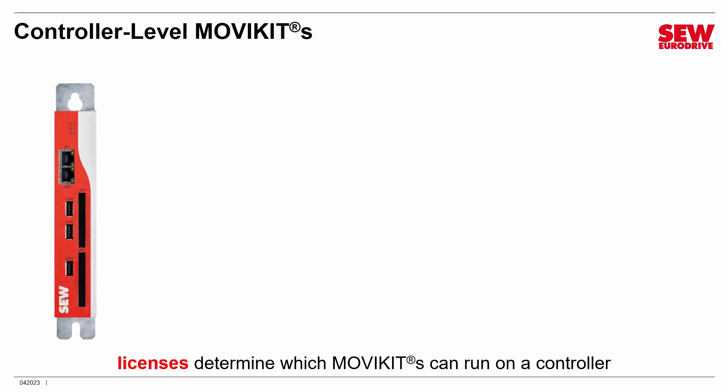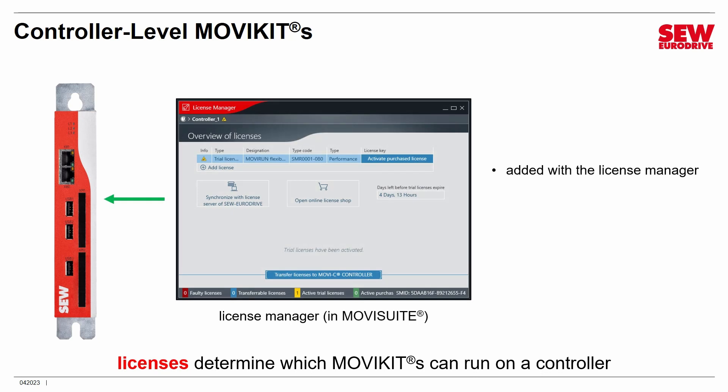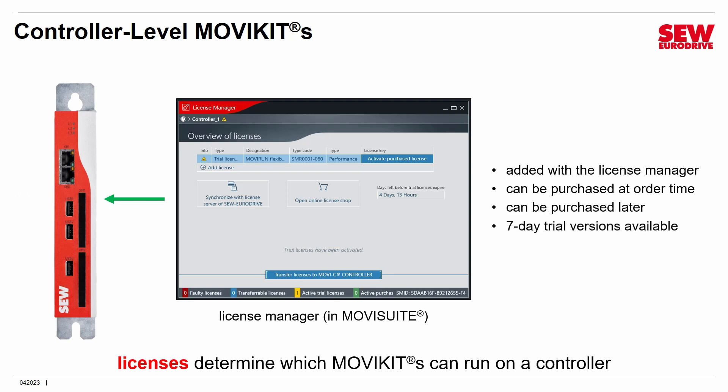Controller level MoVC kits are controlled by licenses, not application levels. You need to purchase a license to run kits that aren't included for free, and you set this up using the License Manager tool in MoVSuite. Licenses can be purchased at order time or later. There are also seven-day fully functional free trial versions available — download one and give it a whirl.